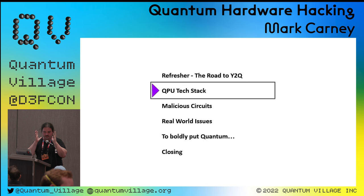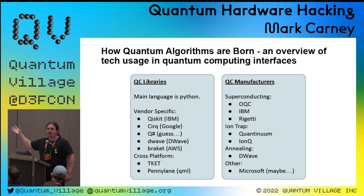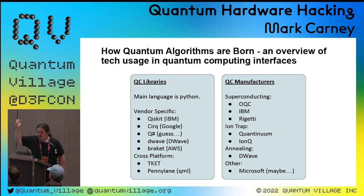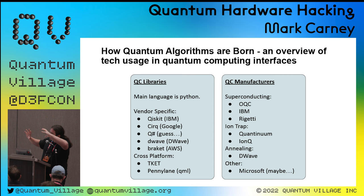Let's look at where these problems come in — the QPU tech stack. This is a quick overview. You've heard of Python libraries like Qiskit, Cirq, Tket, and Qsharp — any guess who invented Qsharp? Yes, Microsoft. Also D-Wave libraries, and Braket — Amazon has their own library that's quite well put together and cross-platform. There's also PennyLane, if you've heard of it.